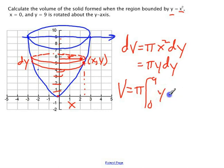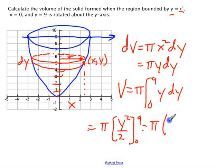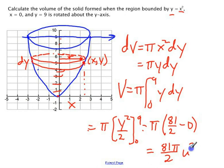Notice I'm using y values, not x values, of y dy, which equals pi times y squared over 2 from 0 to 9, which equals pi times 81 over 2 minus 0. So our final answer is 81 pi over 2 units cubed.